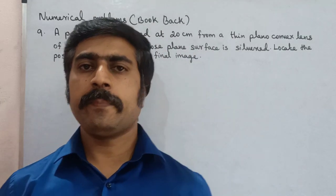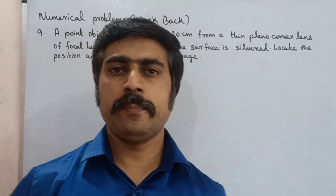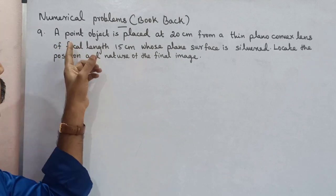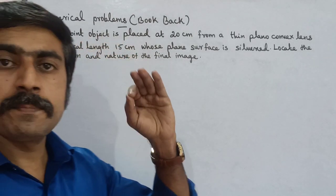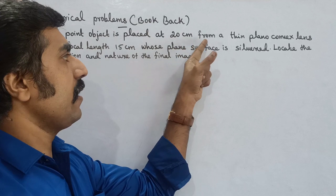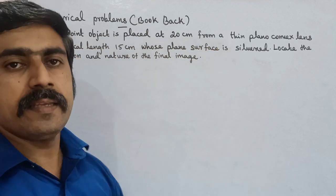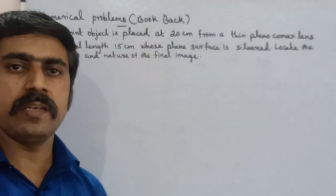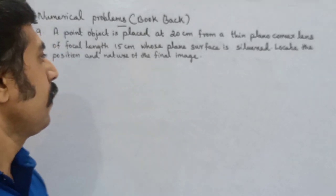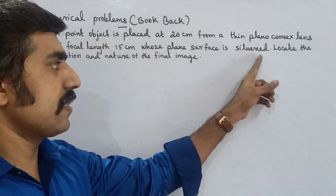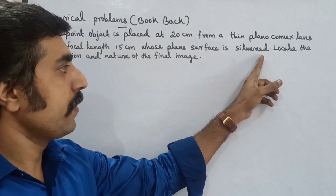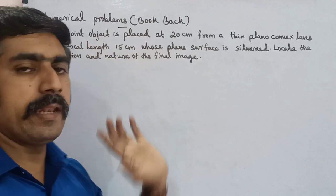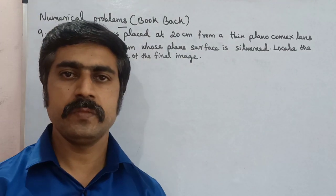Hi students, now we are going to talk about an important problem. A point object is placed at 20 cm from a thin plano-convex lens of focal length 15 cm, whose plane surface is silvered. Locate the position and nature of the final image.